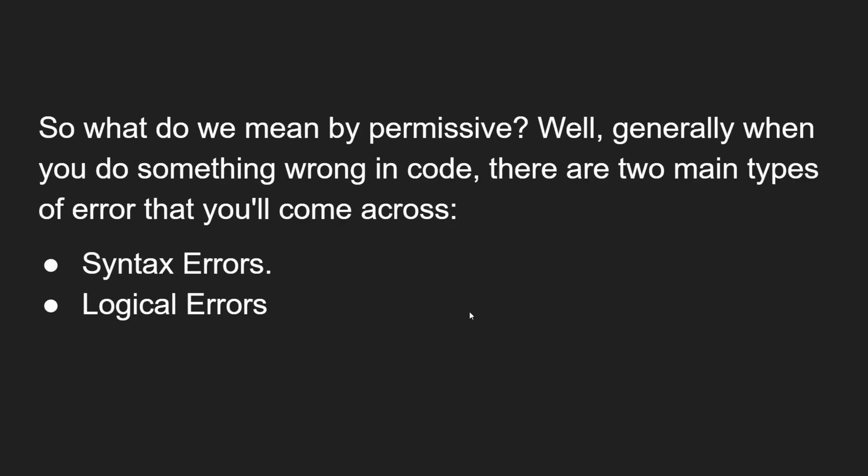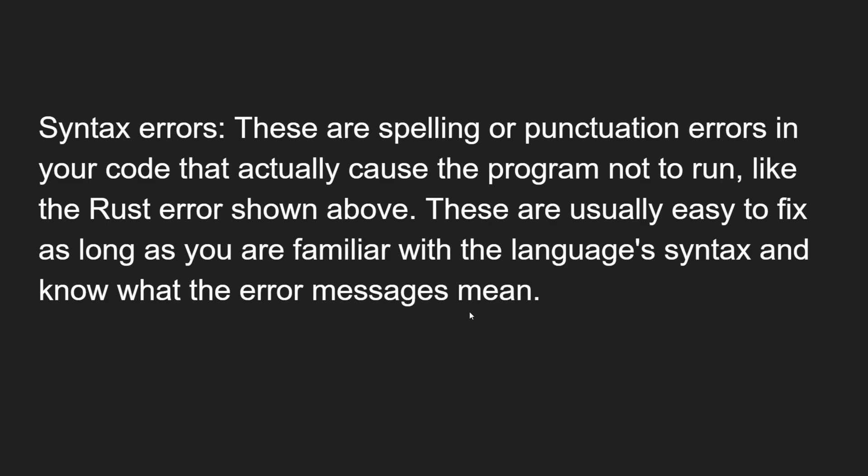What do we mean by permissive? Generally when you do something wrong in code, there are two main types of errors you will come across: one is a syntax error and another is a logical error.